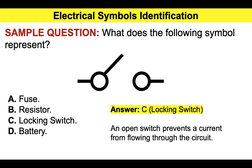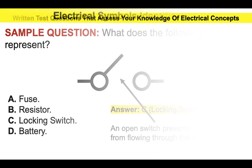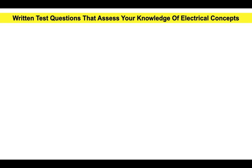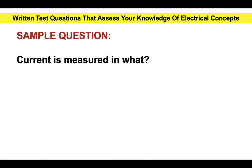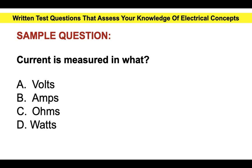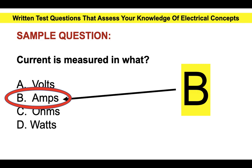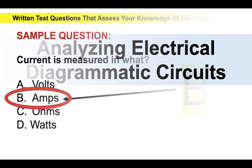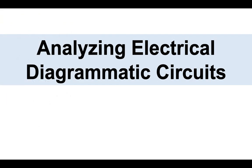Another question type is written test questions that assess your knowledge of electrical concepts. Current is measured in what? Is it A, volts; B, amps; C, ohms; or D, watts? The correct answer is B, amps. The way to get proficient in these kind of questions is to practice lots of them, which is what we're going to do today.